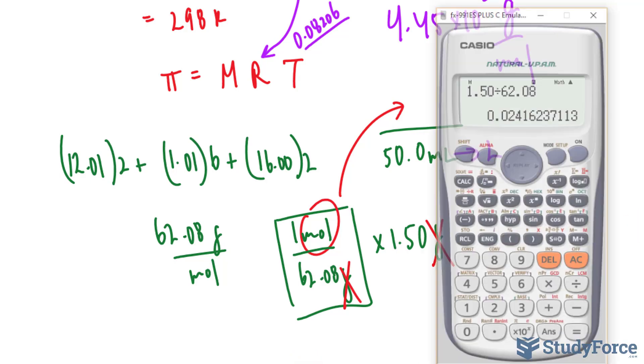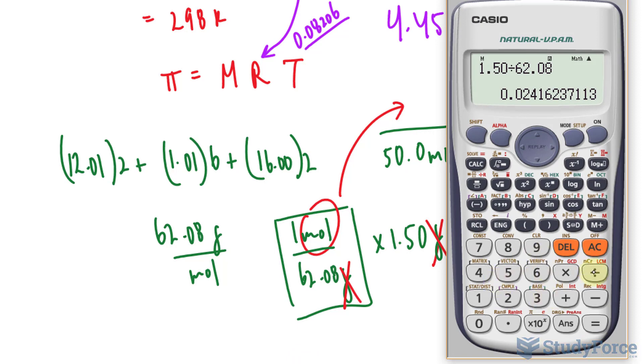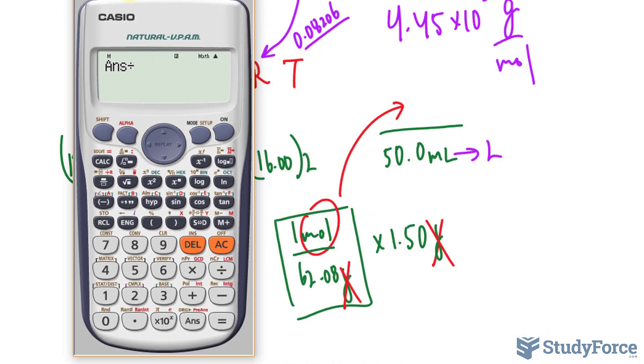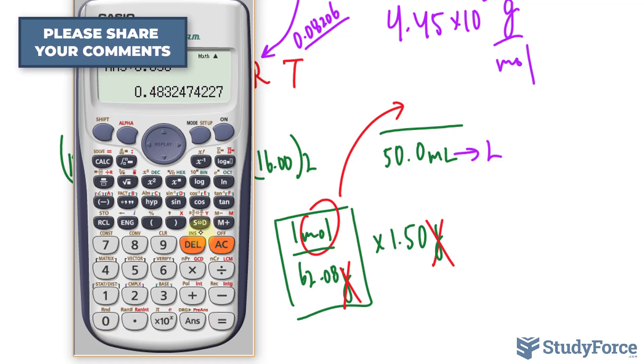because molarity is moles per liter. So I'll change that into liters as well, and I'll take this number, divide it by this number but in liters, which is 0.050. Just pretend that we moved this decimal place three times to the left. And this gives us a molarity of 0.4832.